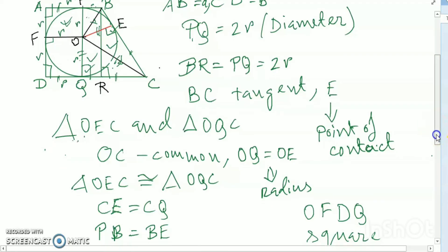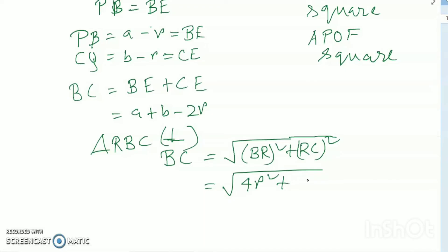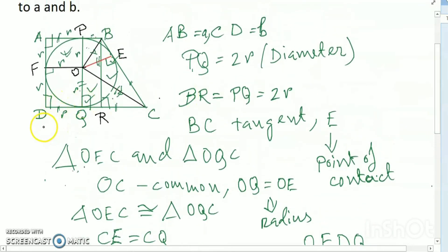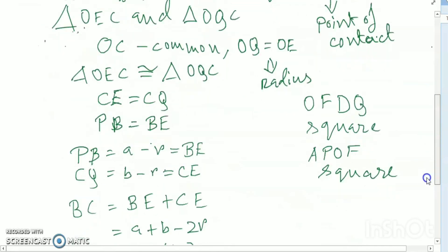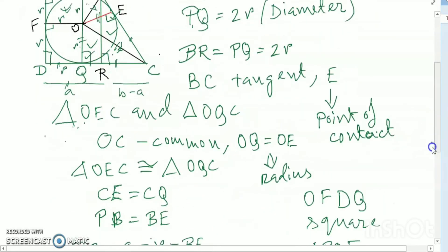RC is equal to b minus a. Because DR equals a (as a parallelogram/square gives that side equals a), so RC equals CD minus DR equals b minus a.